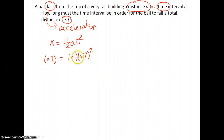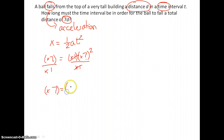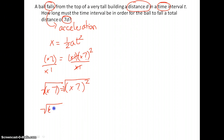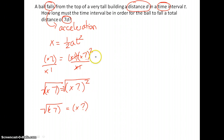We still have the squaring effect on the time, so we need to rearrange and solve for the unknown multiplier. Dividing out the multiplier of one on each side doesn't change anything — we still have a multiplier of seven equal to some multiplier on time that is being squared. To unsquare it, we take the square root. The square root of seven gives us our multiplier effect on time, so the multiplier effect is the square root of seven.